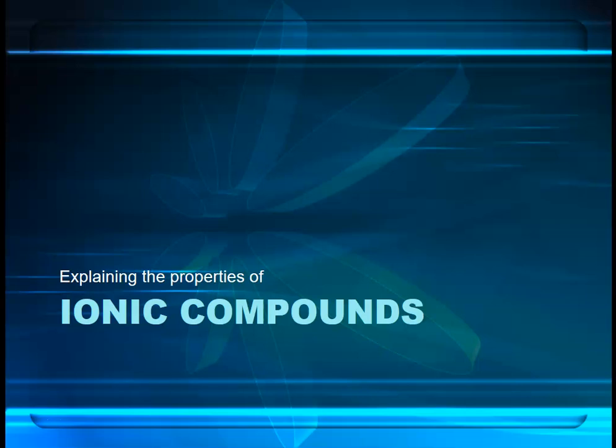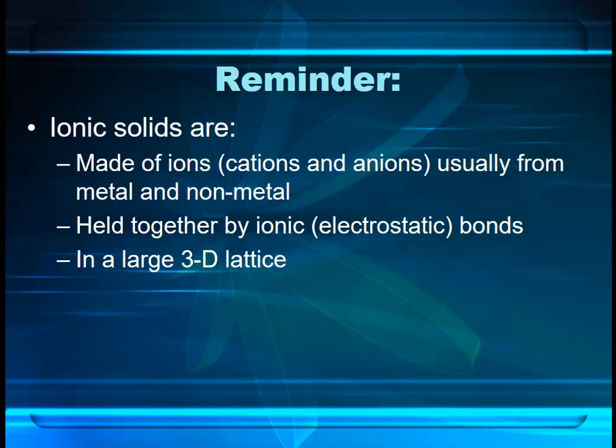Just a quick recap first: ionic solids are made up of ions — cations and anions — which are usually metals and non-metals. They are held together by strong ionic bonds, sometimes known as electrostatic bonds or electrostatic forces. These are the attractions between the positive and negative ions, arranged in a large three-dimensional lattice.